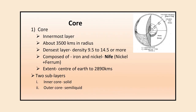The core is the innermost layer of the Earth. It ranges to about 3,500 kilometers in radius and is the densest layer, with density ranging from 9.5 to 14.5 or more. It is composed of iron and nickel, and is therefore known as NiFe. It extends from the center of the Earth to 2,890 kilometers. There are two sub-layers: the inner core, which is solid, and the outer core, which is semi-liquid.